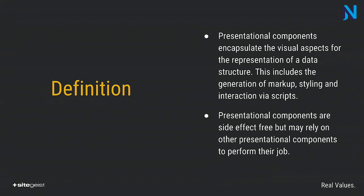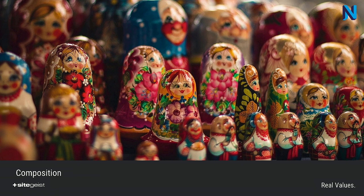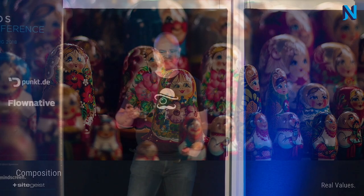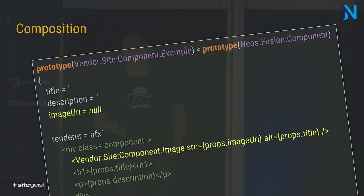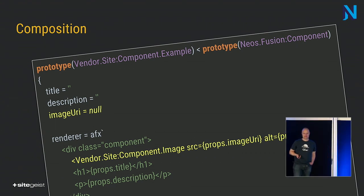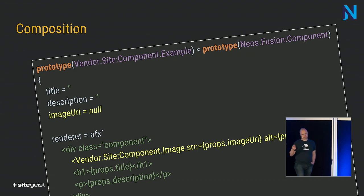The second pattern, still quite trivial, is composition. We have composition when presentational components use other presentational components, creating higher-order components. One component uses another component and passes down props. You can see that there is an additional prop like an image, and it is passed to an image component internally. As long as the API stays the same, the component may use another component to perform the job.